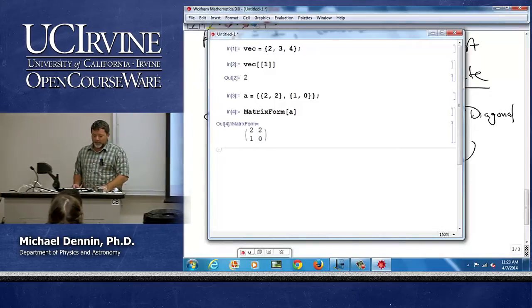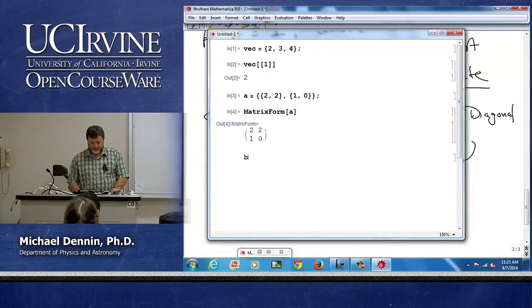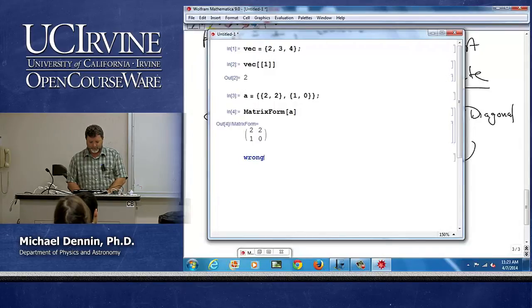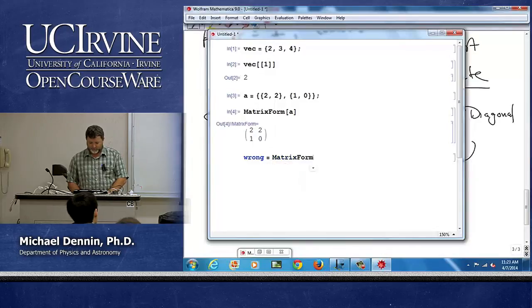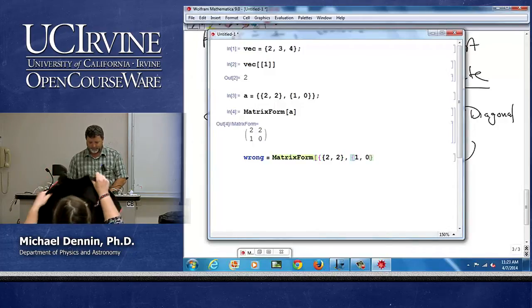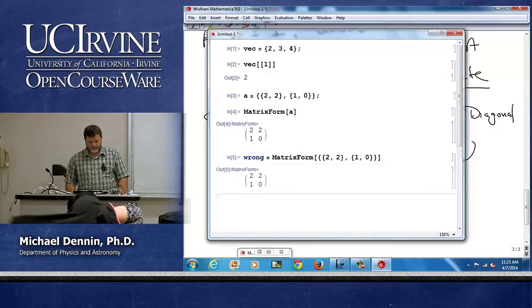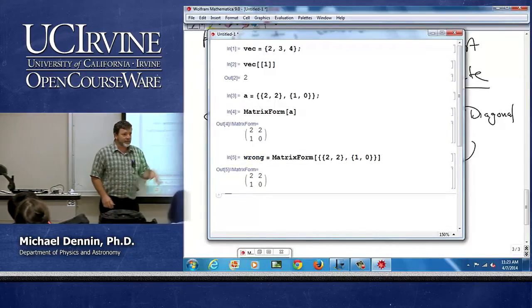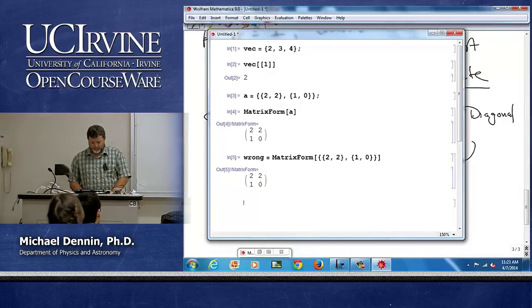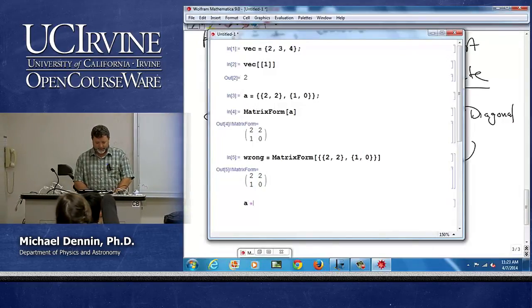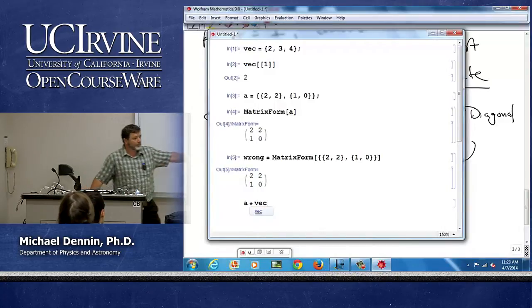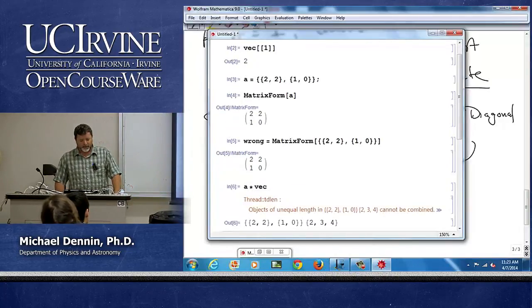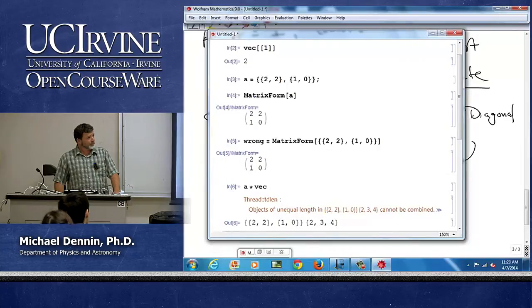Now, if I want to get a problem wrong, let's call it wrong. I will do matrix form of 2, 2, 1, 0. Looks okay. Let's see what's wrong about it. First of all, if I do A times vector using my normal multiplication command, it gets upset because they're of different shapes.